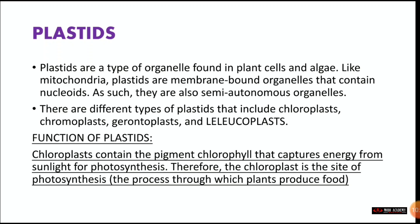Next is plastids. Plastids are not present in the human body; they are present in plant bodies. Plastids are a type of organelle found in plant cells and algae. Like mitochondria, plastids are membrane-bound organelles that contain nucleoids, making them also semi-autonomous organelles — meaning they are partially self-sustaining. There are different types of plastids: chloroplasts, chromoplasts, geranoplasts, and leukoplasts.